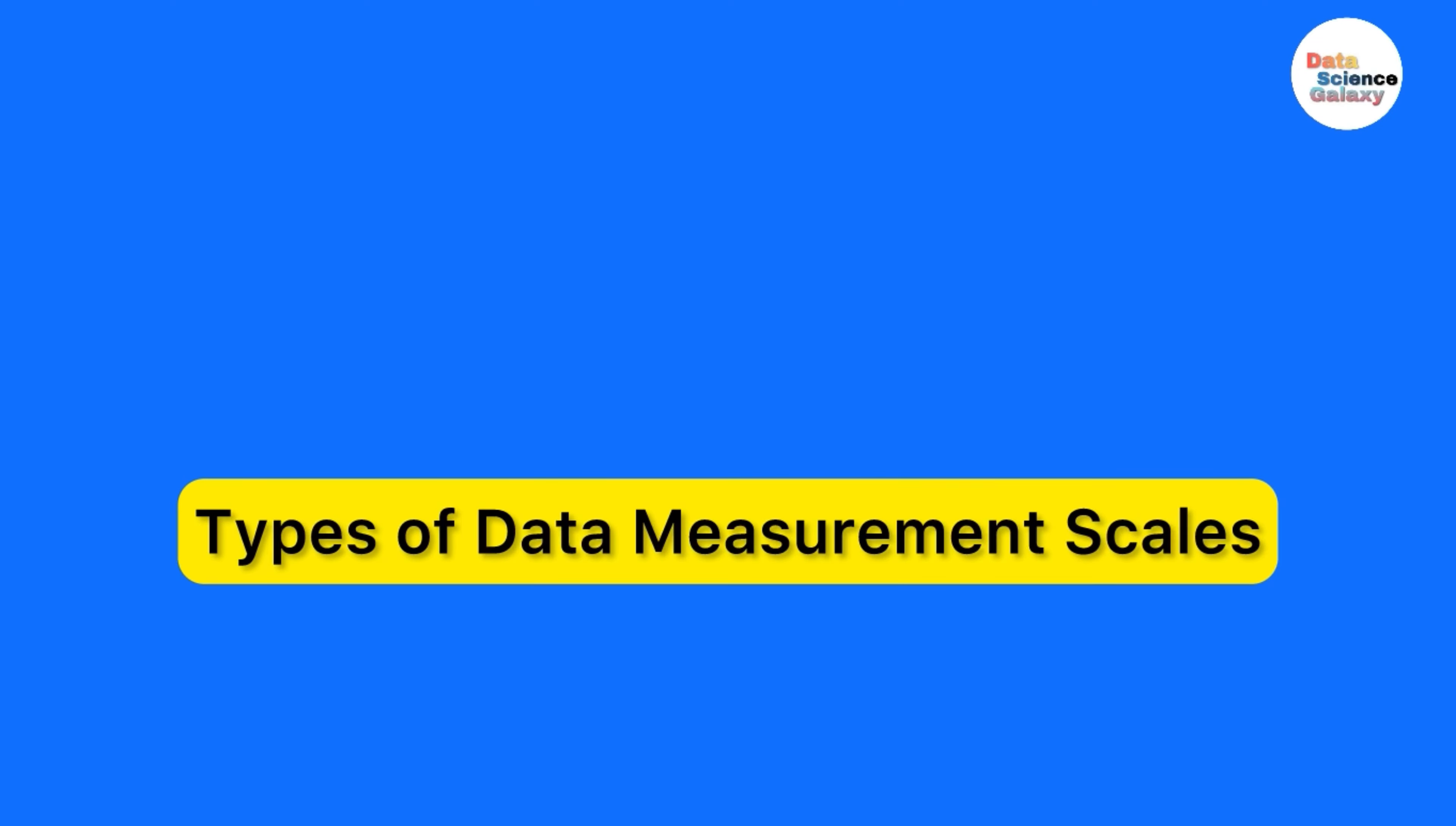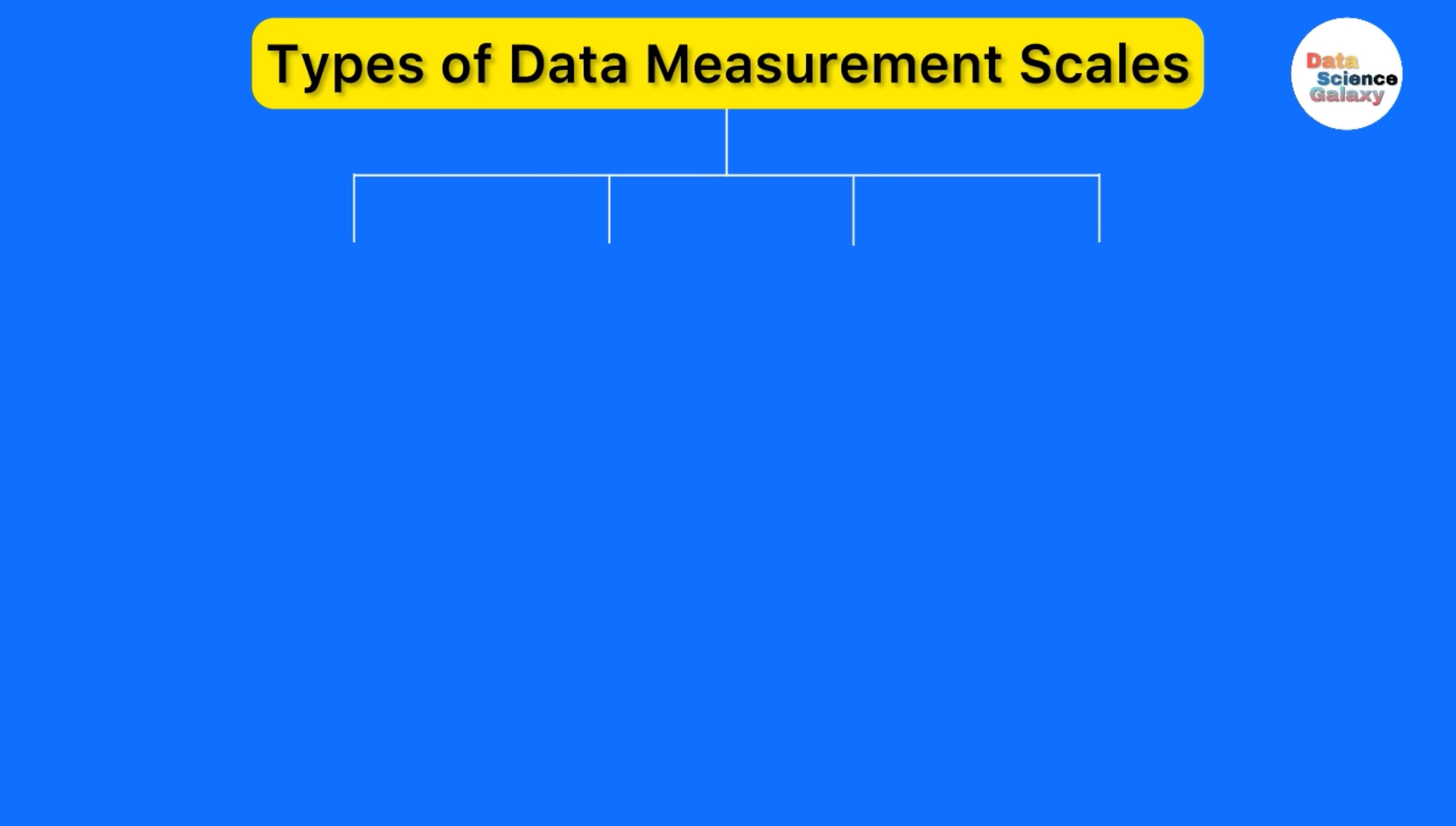Let's look at and understand types of data measurement scales and start with nominal scale. Nominal data could also be called qualitative data and another name is also categorical data. Nominal scale variables refer to basically names that are qualitative in nature. It is used for simply labeling the data.